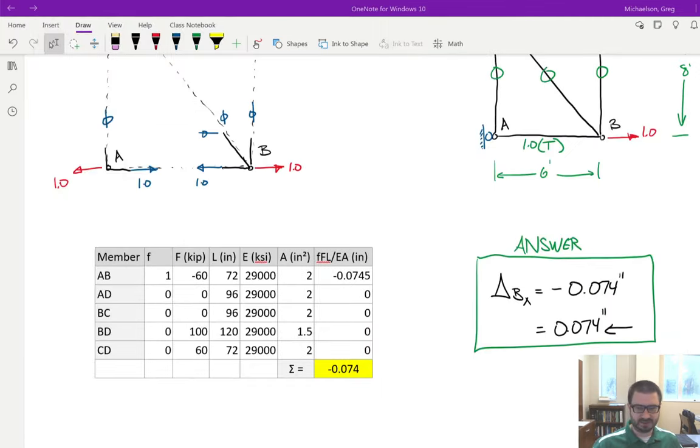But yeah, so this is truss deflections. What you'll find on your homework problem, because you're going to be doing both a horizontal and vertical deflection, is also on the horizontal one, I believe you get a lot of zero force members. So yeah, that's all we have for this video, and we will see you in class on Wednesday.